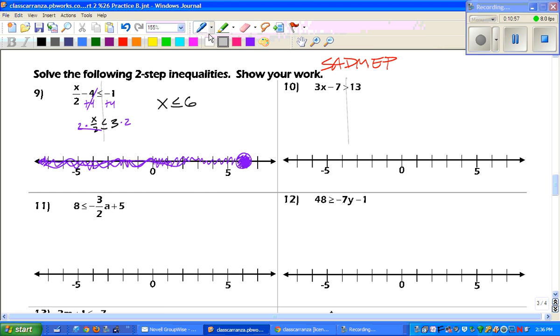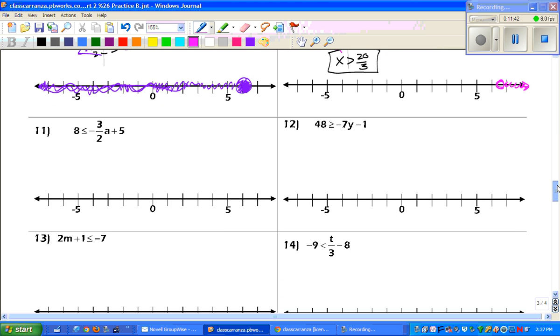Add 7 to both sides. You get 3x is less than 20. Divide by 3. You get x is greater than 20 over 3. Now, that's our answer right there. But we know that 20 over 3, we kind of need to know where that is. And it's approximately 6.7. That's okay to do that on your calculator. So, we want to go to 6.7, which is right around there. And we want all answers greater than that. So, we are going to shade to the right.